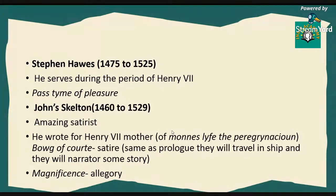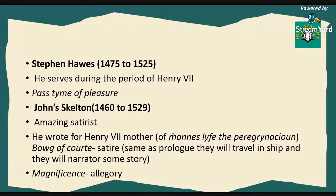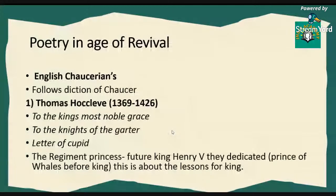Like Lydgate, John Skelton is important — 1460 to 1529. He was an amazing satirist. Whenever you talk about satirists you should always remember Jonathan Swift as well. Skelton wrote for Henry VII's mother — he dedicated The Book of Nugis Curialium to her. The Barge of Court was a satire — similar to a prologue — where, just like Chaucer's Canterbury Tales journey, the same story happens on a ship. He also wrote an allegory called Magnificence.